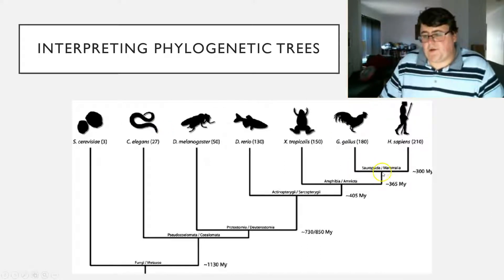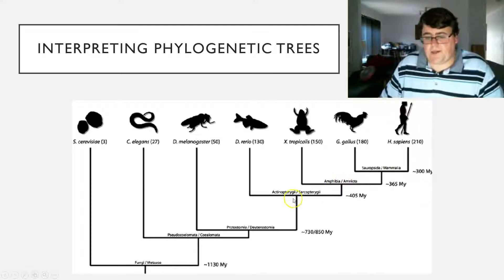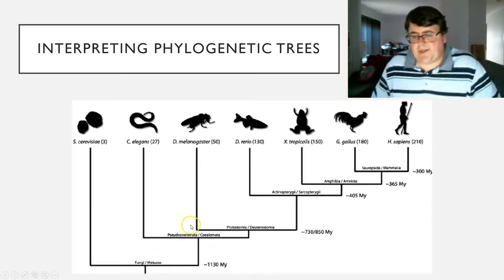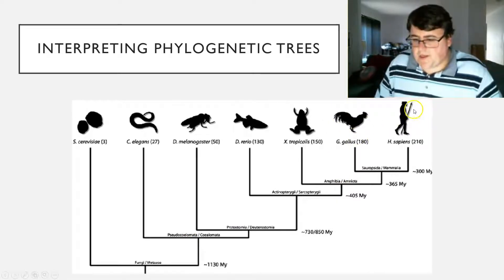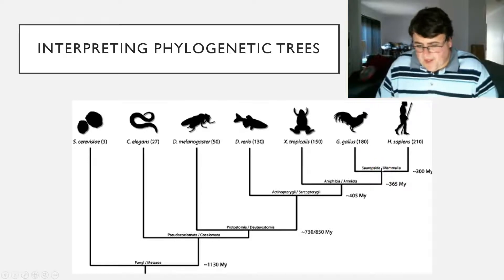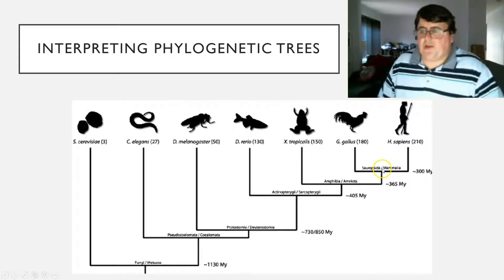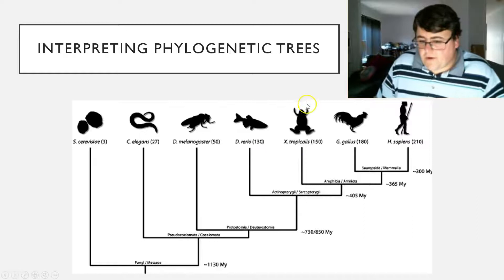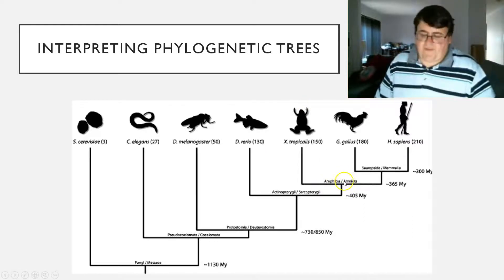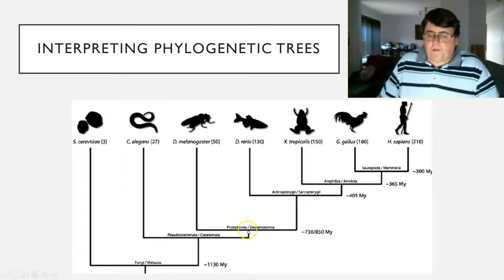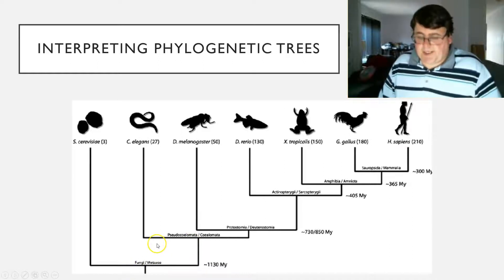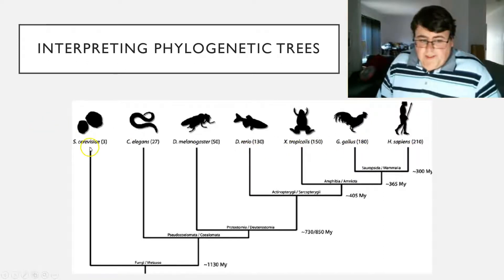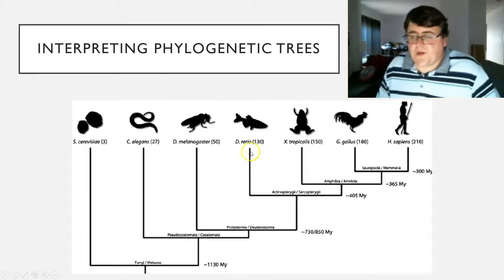First, we have points called nodes. Nodes are the branching points on the diagram, and what a node represents is a common ancestor between two species. So for the rooster and the human, we have a common ancestor at that node. If we go far enough, the common ancestor between a human and a frog is going to be the Amphibia amniota. The nodes represent the most recent common ancestor between those species. Each of the endpoints — like Homo sapiens, Xenopus, Danio rerio, etc. — are called terminals, and a terminal represents an organism that shares a common ancestor.